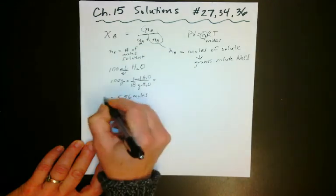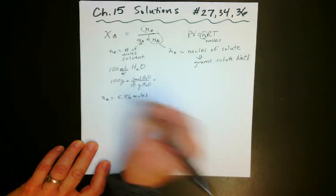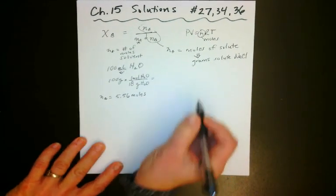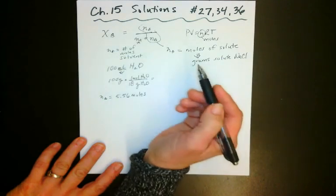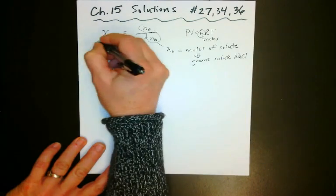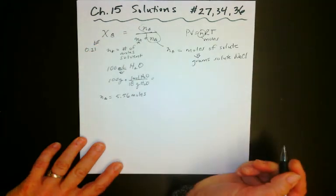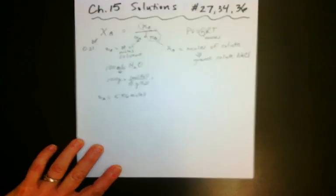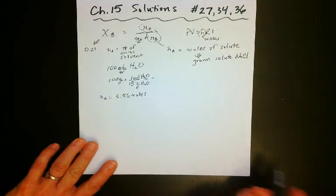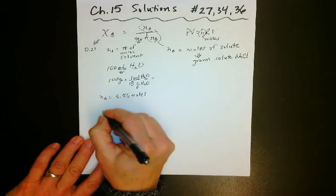So water weighs about 18 grams, two hydrogens and one oxygen. And that is going to give us 5.56 moles. So now we're ready to plug that in for our NA. And then we need our XB, which they gave us. The XB was 0.21. So now I'm ready to plug everything in.